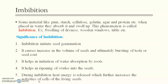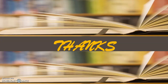Imbibition helps in the ripening of ovules into seeds. During imbibition, heat energy is released, which further increases the activities of cells of the living seeds. When seeds germinate, their temperature increases due to this released heat energy, which in turn increases the cellular activities in living cells. Thanks.